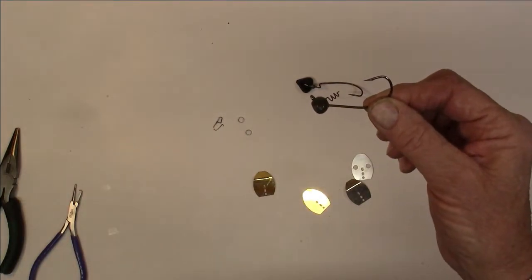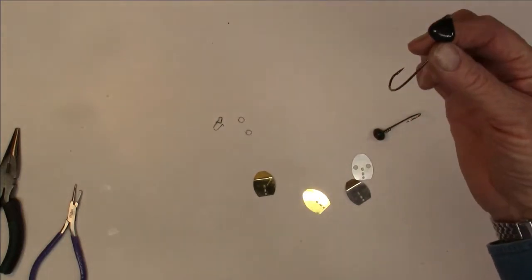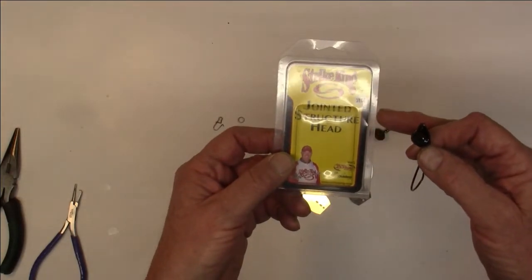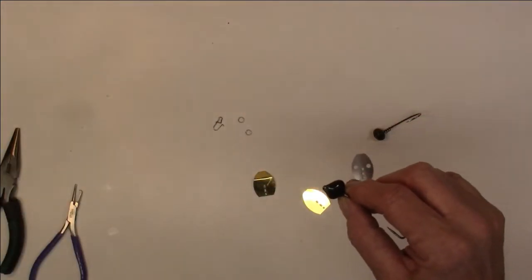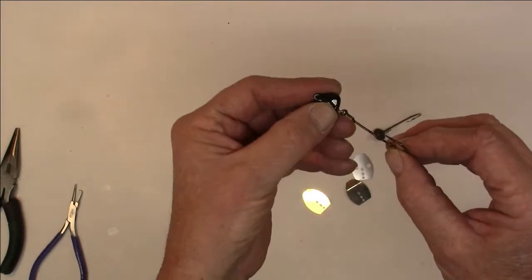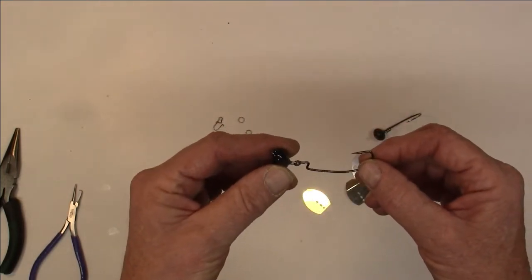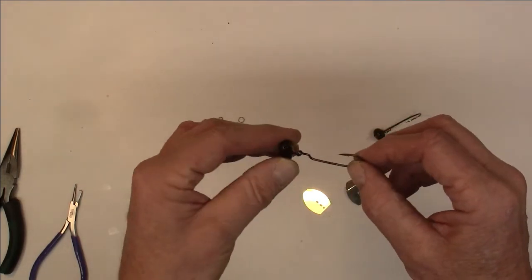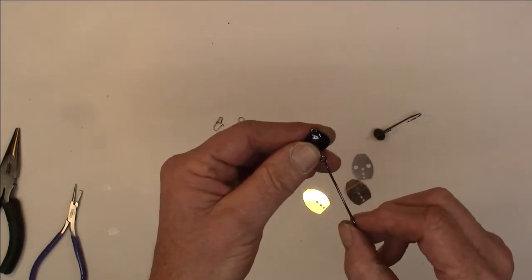The other one that I found this last year is this Strike King jointed structure head. The package is 3/8, I believe this is actually the half ounce because I bought some of each. It's got a pivot point that's missing in the other stuff. I like that extra pivot point, I think that'll help keep from losing fish when they're jumping and trying to throw a hook. Again we have to have the line tie horizontal in order to get the job done.